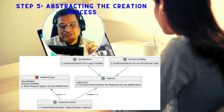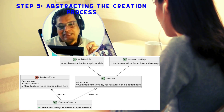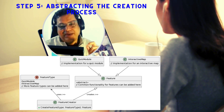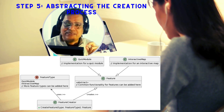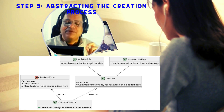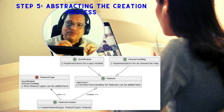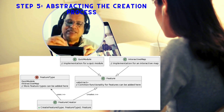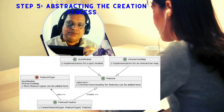Here, there are two features defined: module and interactive map. And this feature product will be returned from the feature creator method according to the type.